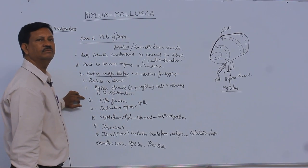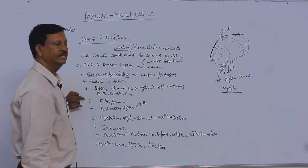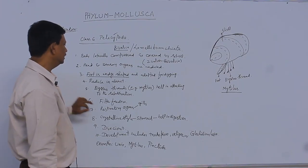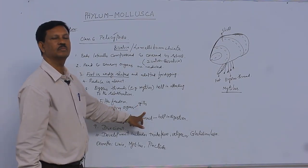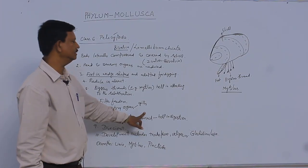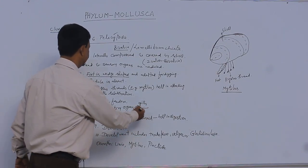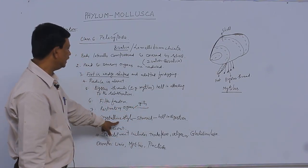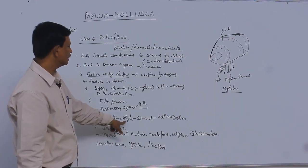These are filter feeders. The main respiratory organs are gills. Being aquatic animals, the respiratory organs are well developed in this class. Crystalline style is present in the stomach region.